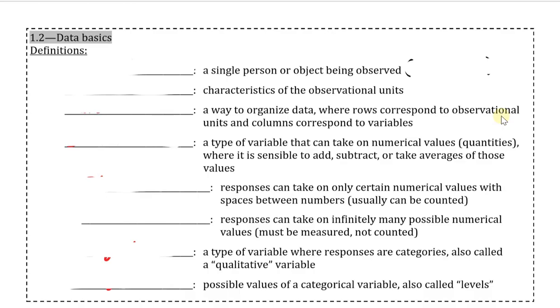First though, we define what we call an observational unit as a single person or object being studied, someone or something that can give us different data values. Often times, you will see observational units also defined as an individual in the study, though we sometimes refrain from using that terminology as we do not want to give the implication that we are always studying living beings, as an individual tends to imply.